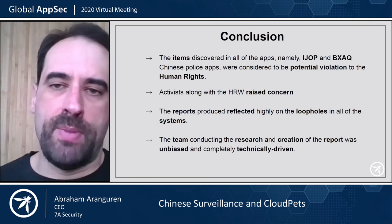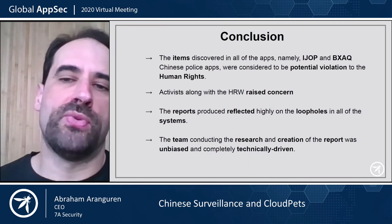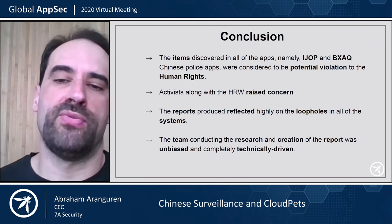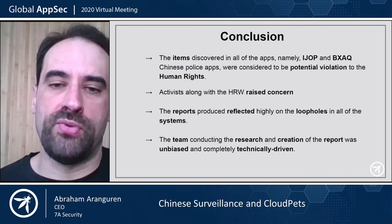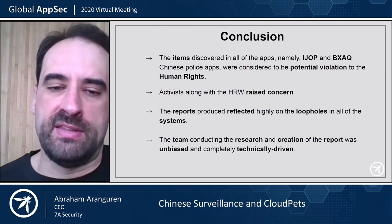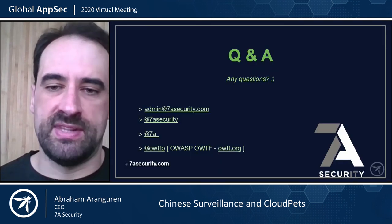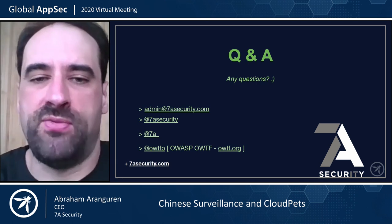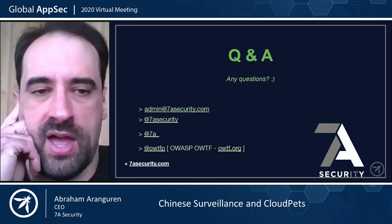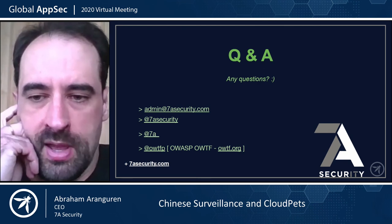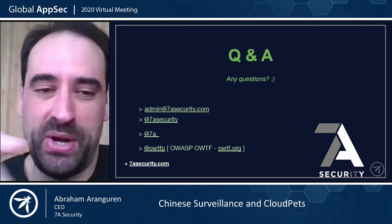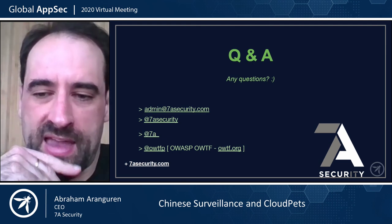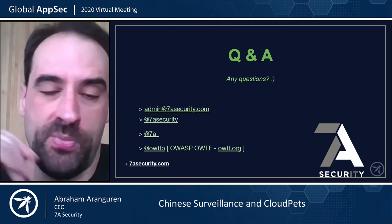So two applications — iJob and BXAQ. The police use iJob to fill out forms, and BXAQ is put on the phone to get data from it. Human Rights Watch raised concerns and their reports reflected highly on the loopholes in all of these systems. We were technically driven and just trying to answer questions — we didn't get into the politics. If you have any questions, since this is recorded, you can shoot me an email and I'll do my best to answer. These apps are part of our mobile course, so any 7eSecurity student attending a mobile course will get access to all these apps to play with. Thank you for joining us.